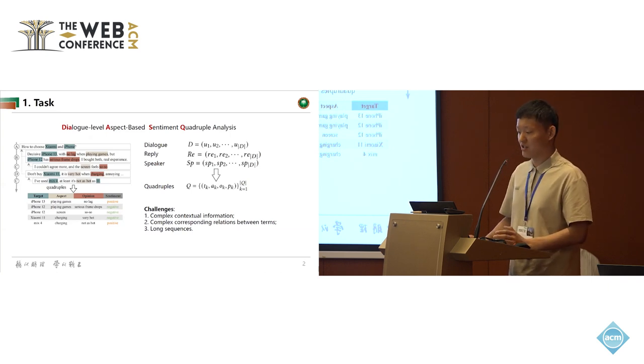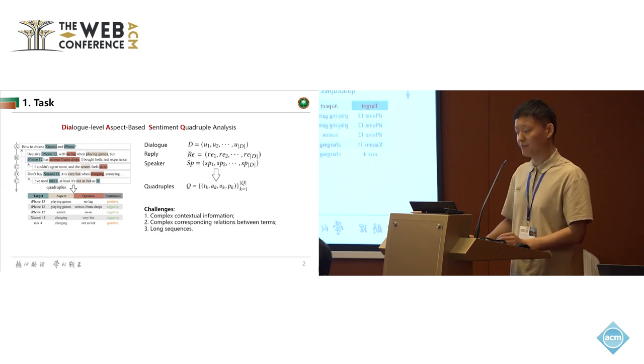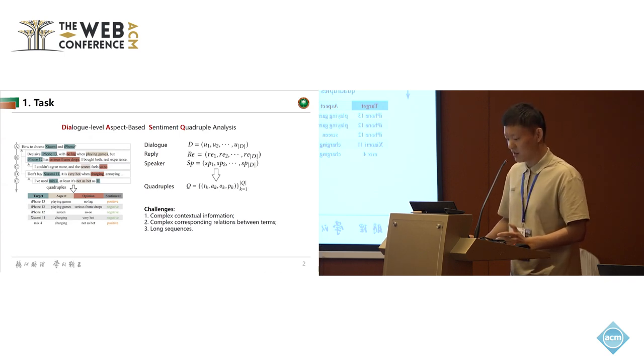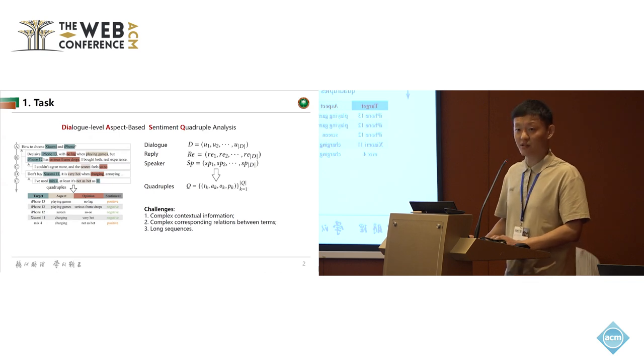Besides, it's a challenging task because it has complex contextual information, complex corresponding relations between terms—namely the relation between target term and aspect term, the relation between target term and opinion term, the relation between aspect term and opinion term—and it has long sequences.